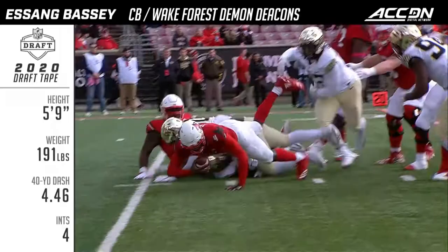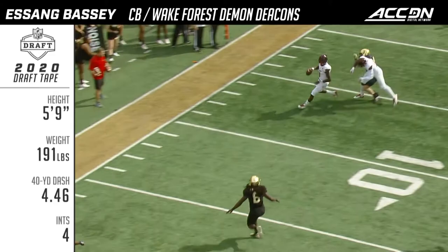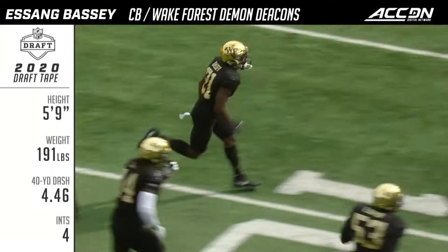Isang Basi from the corner. This is third and inches. Jackson under pressure, Dawson chasing him and he gets leveled. And then Jackson gets picked off — intercepted by Isang Basi in the end zone.